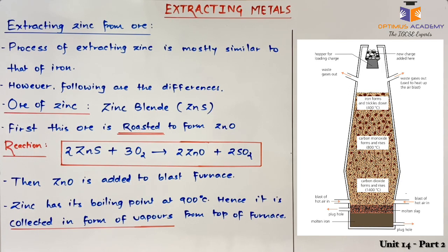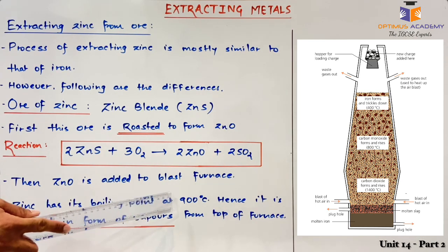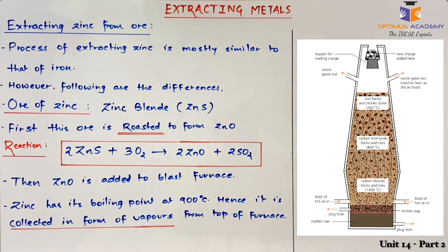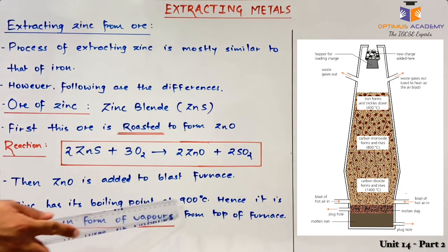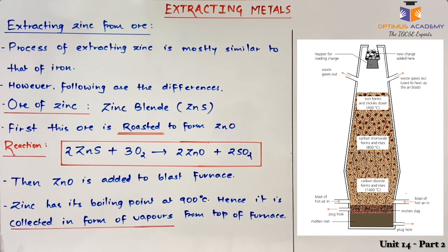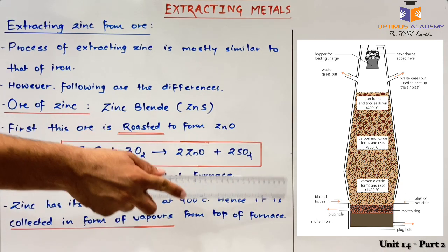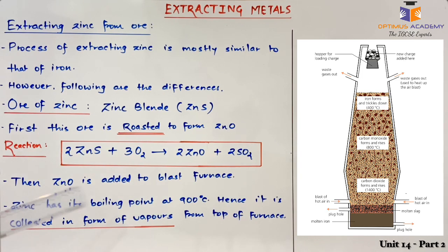The other key difference is that zinc has its boiling point near 900 degrees Celsius. The temperature of the blast furnace may reach around 1800 degrees Celsius, which is above the boiling point of zinc. Hence, zinc is collected in the form of vapors from the top of the furnace, unlike iron which is collected in liquid form at the bottom.